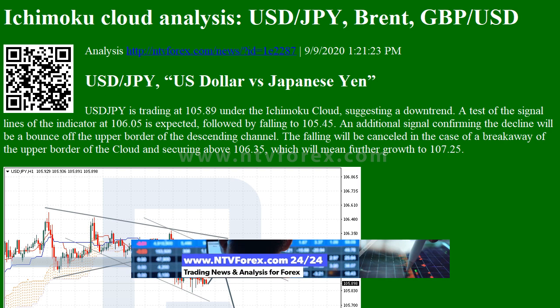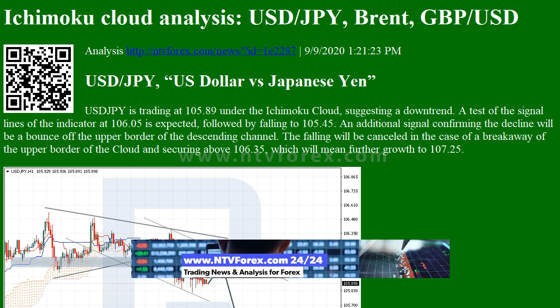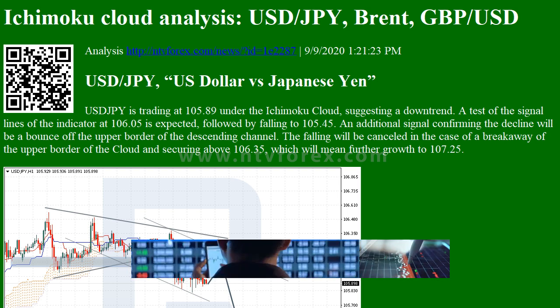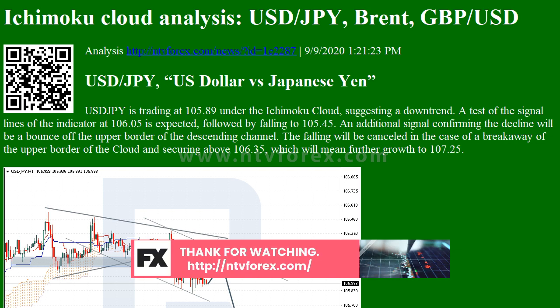USD/JPY is trading at 105.89 under the Ichimoku cloud, suggesting a downtrend. A test of the signal lines of the indicator at 106.05 is expected, followed by falling to 105.45. An additional signal confirming the decline will be a bounce off the upper border of the descending channel.